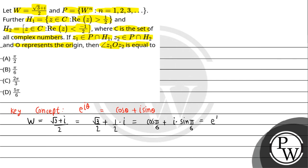So w is expressed as e^(iπ/6). अब अगर हम बात कर रहे हैं w raise to power n की, जो कि p का value है, तो ये क्या जाएगा — हमारे पास e raise to power iota n pi by 6 बन गया, जहाँ n का value है 1, 2, 3 आगे चल रहा है।